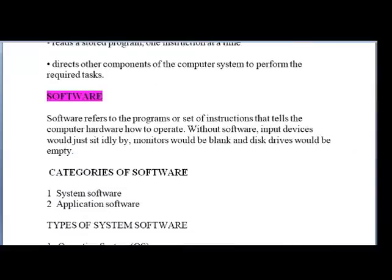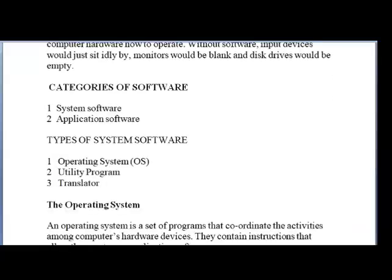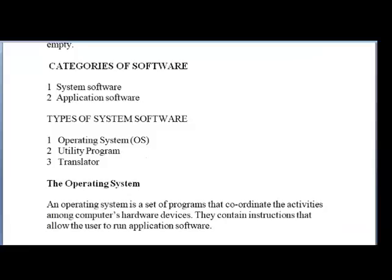Software refers to the programs or set of instructions that tells the computer hardware how to operate. Without software, input devices will just sit idly by, monitors would be blank, and disk drives would be empty. There are two categories of software: system software and application software. When it comes to system software, there are three types: the operating system, the utility program, and the translator. For this subject, we only speak about one — the operating system.